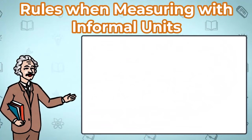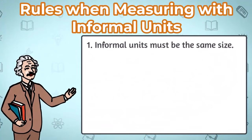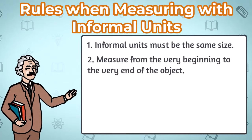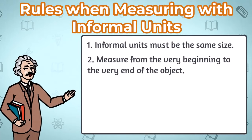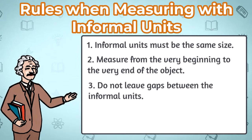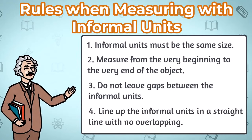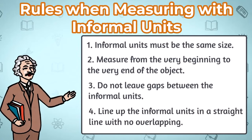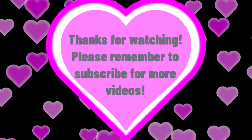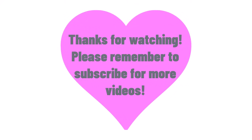Let's go through all the rules when measuring with informal units again. Rule 1: Informal units must be the same size. Rule 2: Measure from the very beginning to the very end of the object. Rule 3: Do not leave gaps between the informal units. And rule 4: Line up the informal units in a straight line with no overlapping.